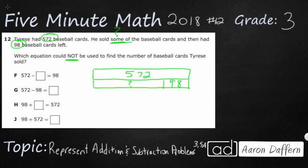So this unknown part and the 98 put together make the 572. We can use our fact family knowledge to take this representation, turn it into number sentences, and then create other number sentences in that same fact family. Three of those number sentences will be found, and the one that's not will be the answer, because we're looking for which one is not going to work.